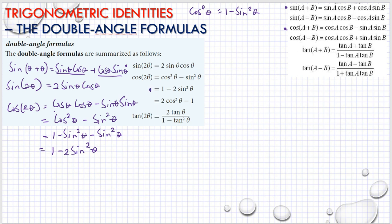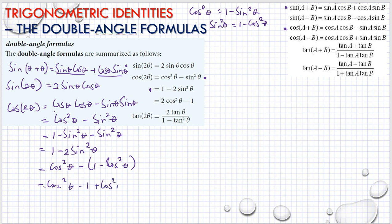I have proven that. Now, if we say that sine²θ is equal to 1 minus cosine²θ, then we have cosine²θ minus (1 minus cosine²θ), which gives cosine²θ minus 1 plus cosine²θ, resulting in 2 cosine²θ minus 1. So all of these forms are equal to cosine 2θ.